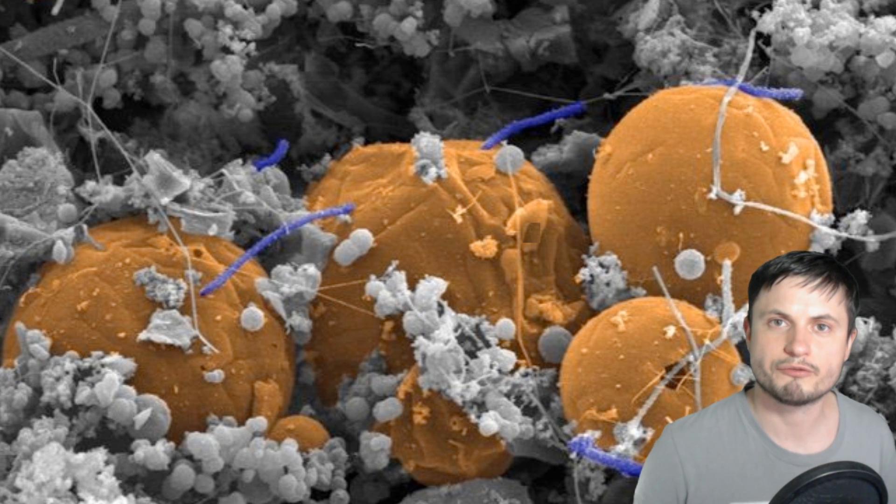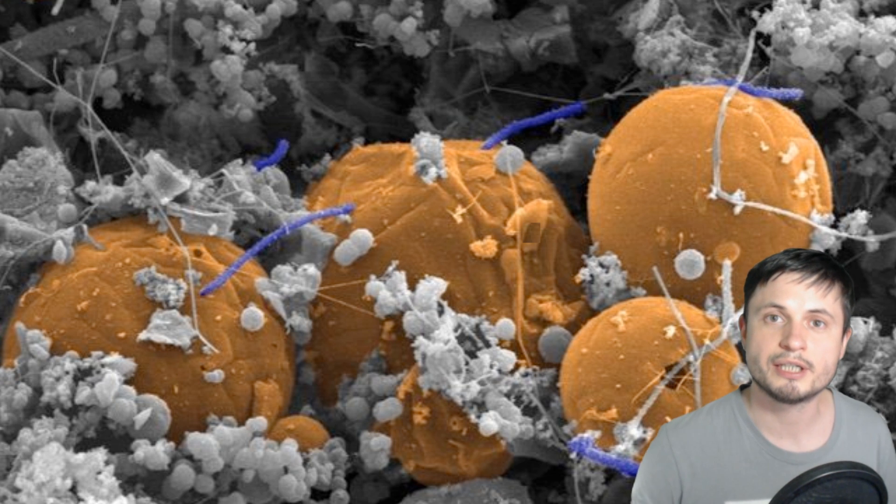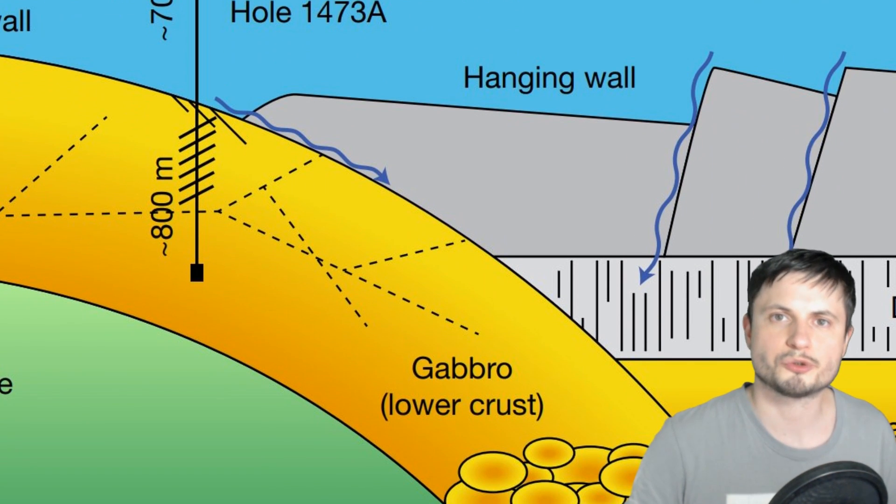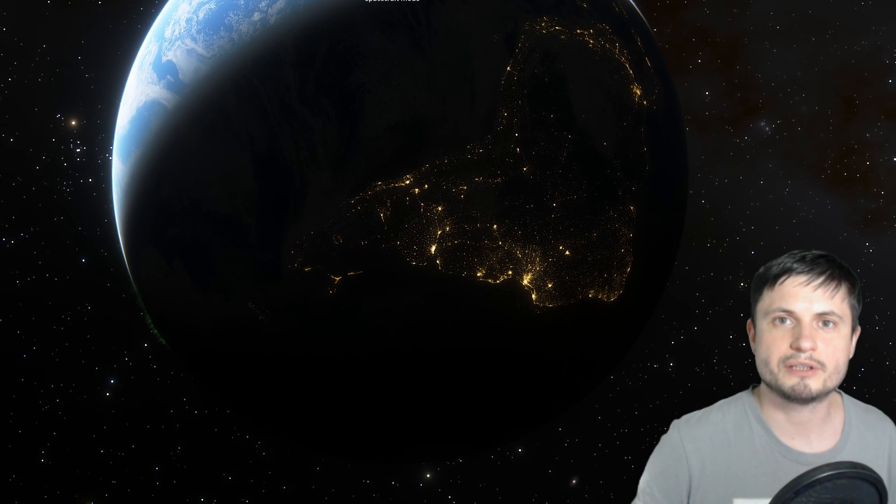But for now, discovering these extremophiles in these very inhospitable conditions has actually been only more support for the so-called existence of extraterrestrial life. Because obviously, if life can survive here, it will probably be able to survive on a lot of other objects in the solar system and possibly even other exoplanets out there in our galaxy, the Milky Way.